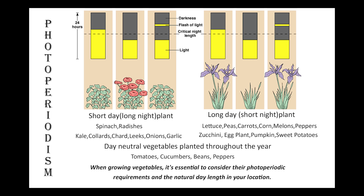8. Plant adaptation: different vegetable plants have evolved to thrive in specific environmental conditions. Understanding the preferred climate, sunlight, and soil conditions for each vegetable will help you select appropriate varieties and ensure successful growth.